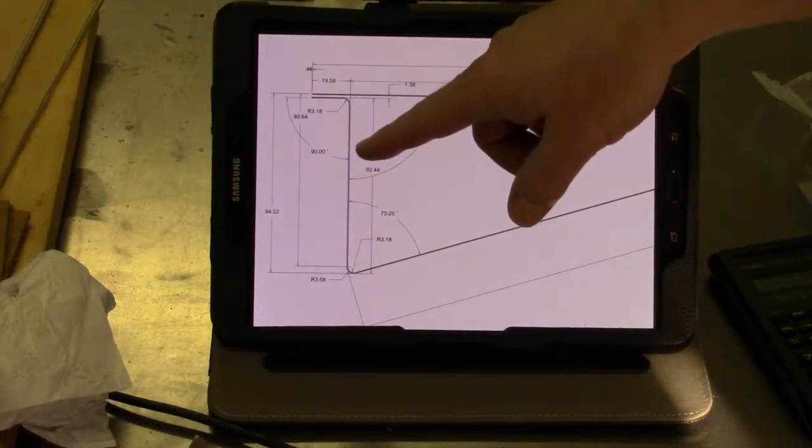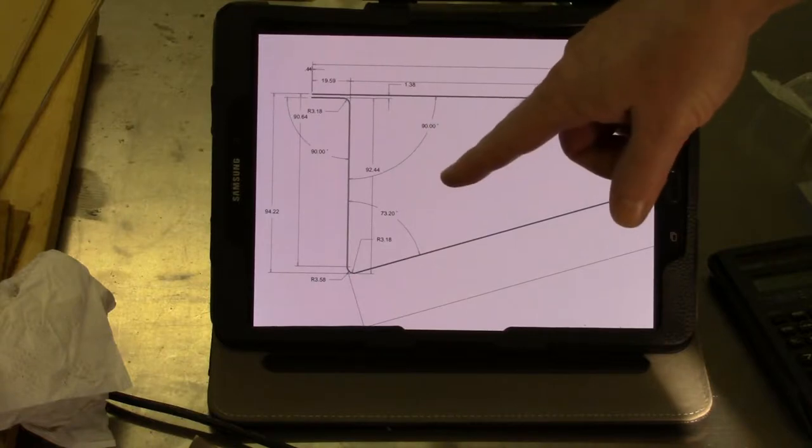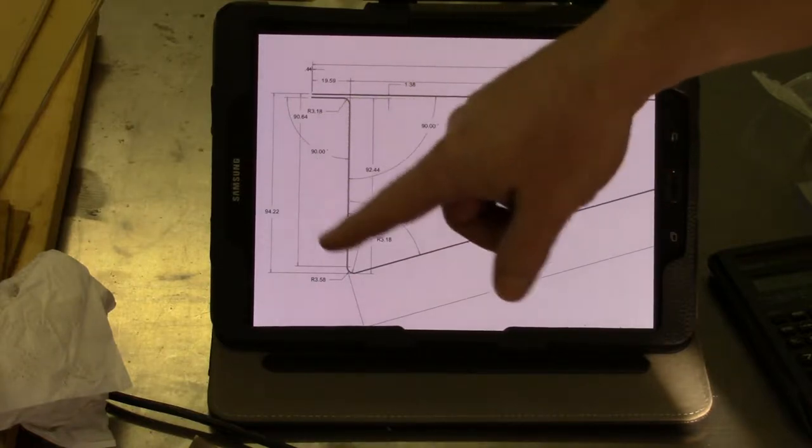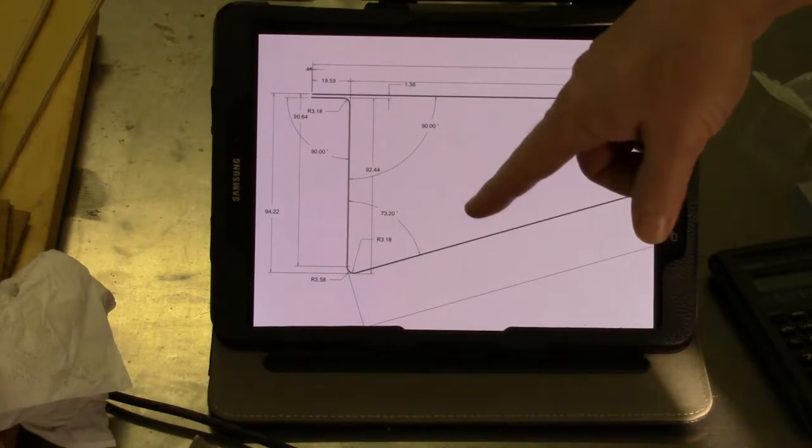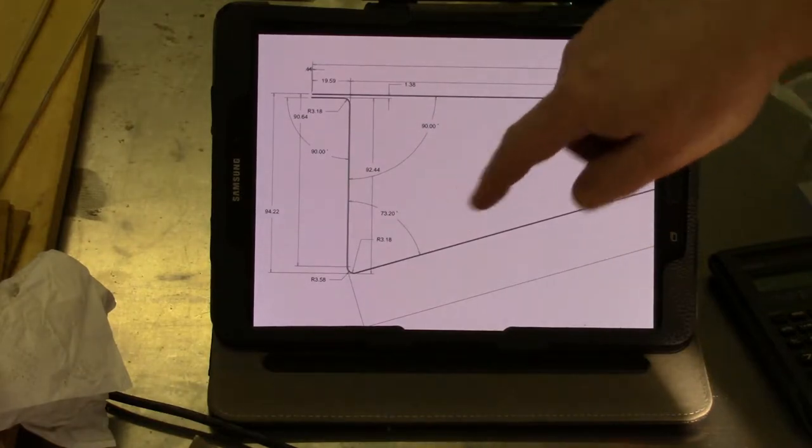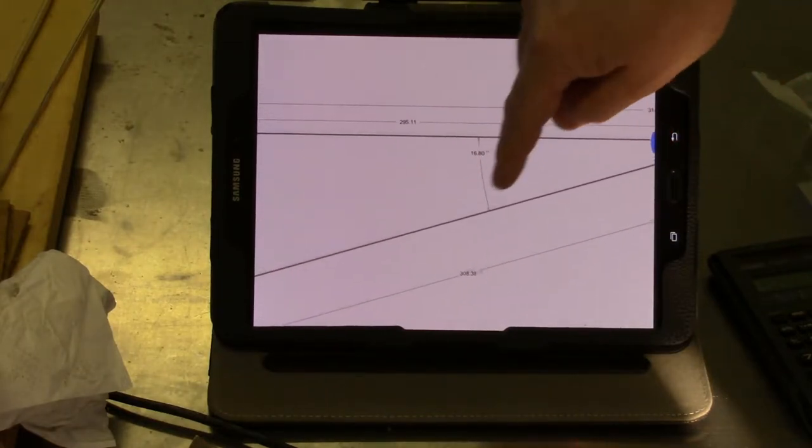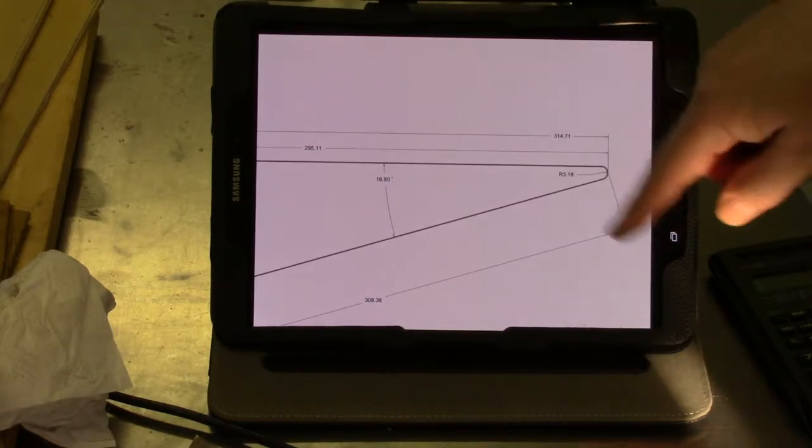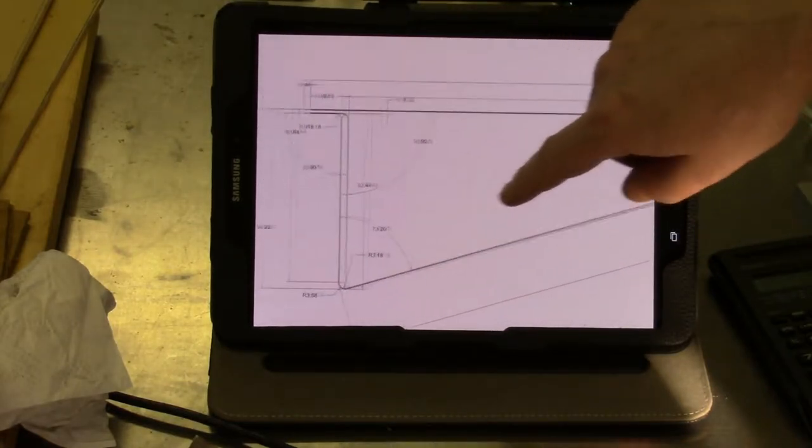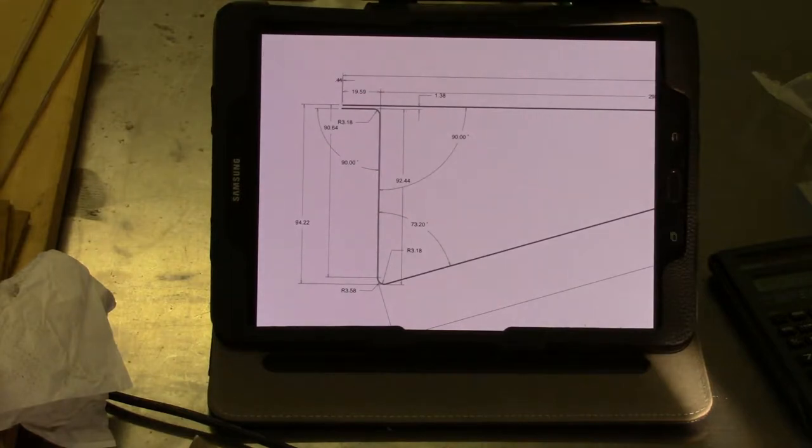Whenever you're doing something like this, it's always a good idea, even if it seems obvious, to clearly mark every dimension that you can. Don't think that, well, since this says 16 degrees or 16.8 degrees, I'll remember to do 90 minus.